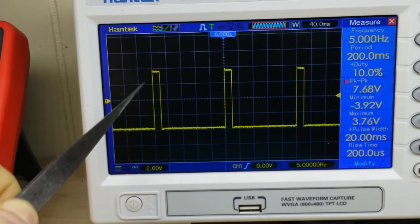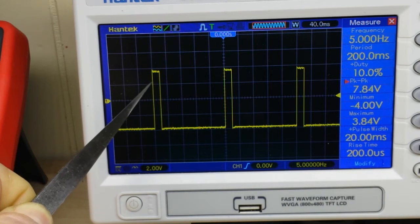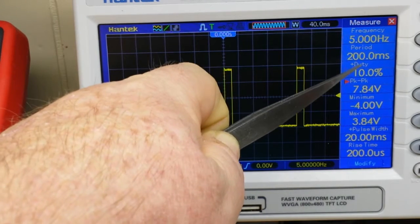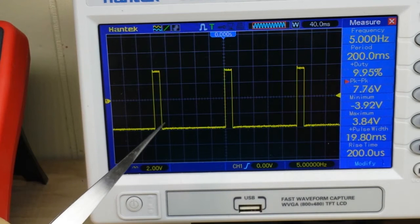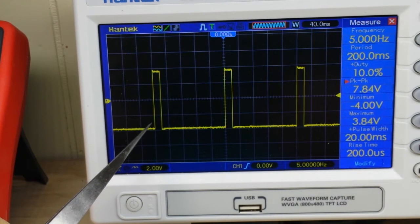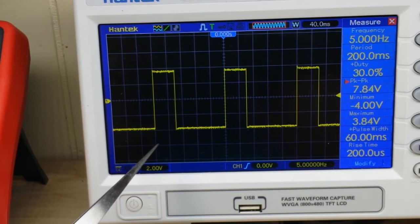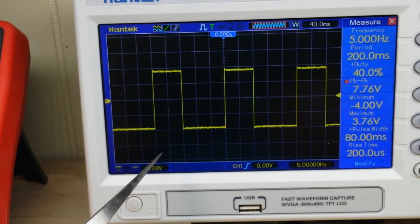but the length of time in which the wave is high is now less. You can see the duty cycle is 10%. So if I adjust the duty cycle, 10, 20, 30, 40, 50, you can see that the length of time stays high longer.